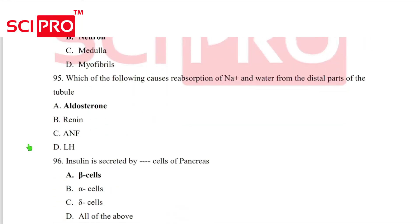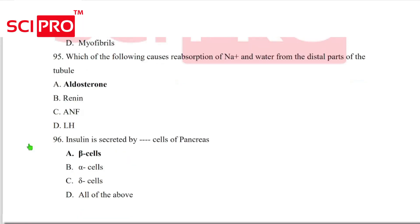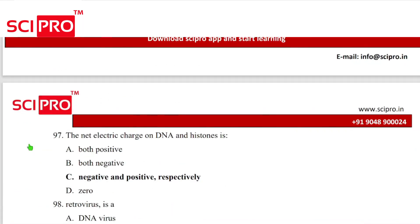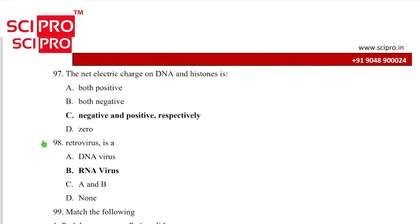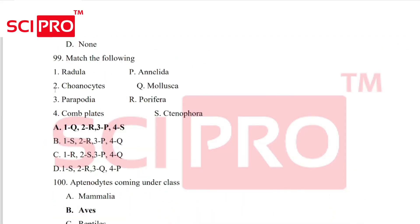Question number 96, insulin is secreted by beta cells of pancreas. Question number 97, the net electric charge on DNA and histone is, in DNA it is negative and histone is positive. Question number 98, retrovirus is a RNA virus.